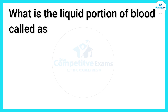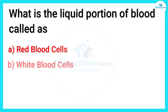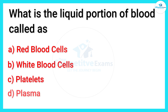What is the liquid portion of blood called? What do you call the part of the blood that is in liquid form? Your answers are: red blood cells, white blood cells, platelets, and plasma. The right answer is...